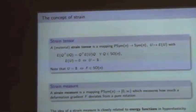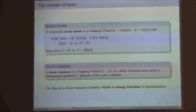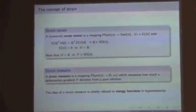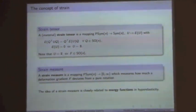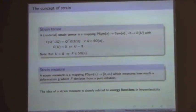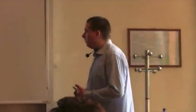We want the strain to vanish if and only if it is a rigid body movement, so a translation and a rotation. We lose the translation by the gradient, and the rotation should yield zero. A strain measure is simply a non-negative number associated with some deformation gradient, measuring how much a deformation gradient deviates from a pure rotation. That is the basic idea behind strain.